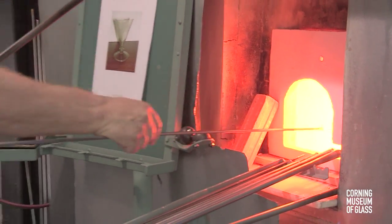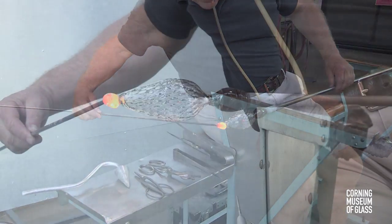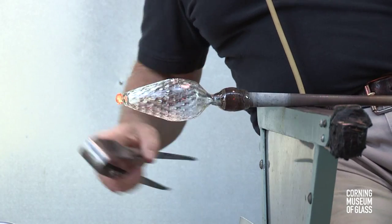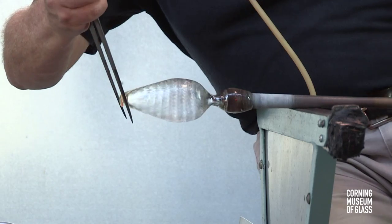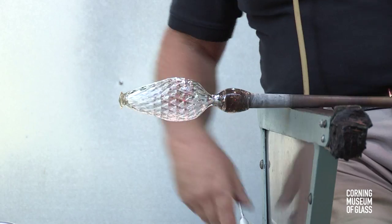A small amount of glass is gathered from the furnace and added to the tip of the bowl. Using the jacks, the two-bladed tool, the glass is tooled or manipulated to form a disk known as a merese.